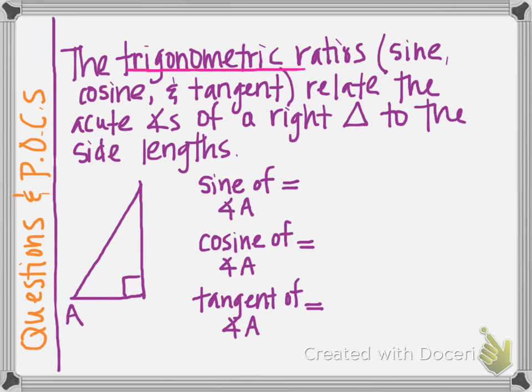Trigonometric ratios are something you'll learn about here just on the surface. We're going to have an introduction to it, but you'll use this a lot more in pre-calculus and in physics. The three types of trigonometric ratios we will be focusing on here are sine, cosine, and tangent. The trigonometric ratios are ratios between the sides of a right triangle as they relate to certain acute angles of the right triangle. There are two acute angles in a right triangle, and these ratios are based off of the position of the sides with respect to one of those acute angles.